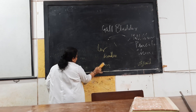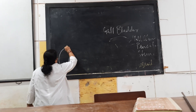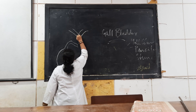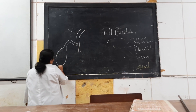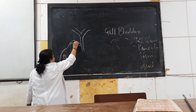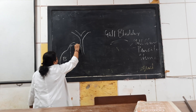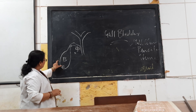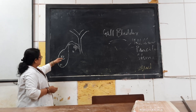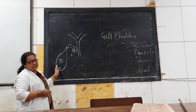The gallbladder has three parts: the fundus, the body, and the neck, which leads into the cystic duct. The fundic part is fully covered with peritoneum — that is the serous covering. The part that lies in the gallbladder fossa is covered by adventitia, and the rest is covered with serosa.